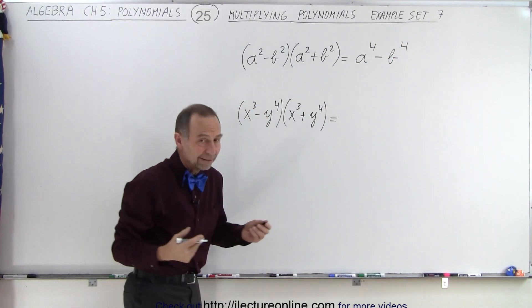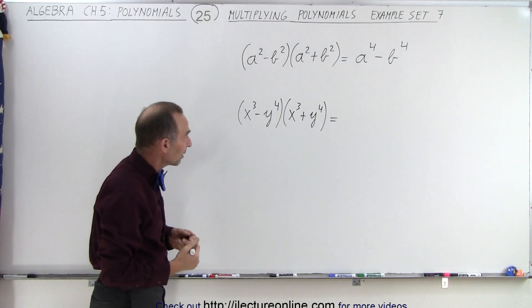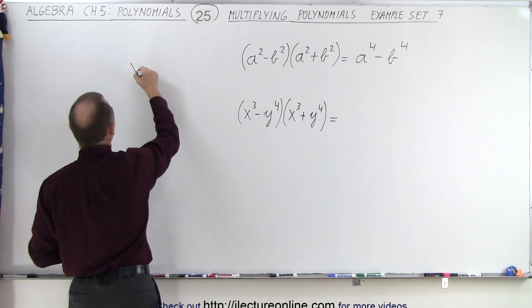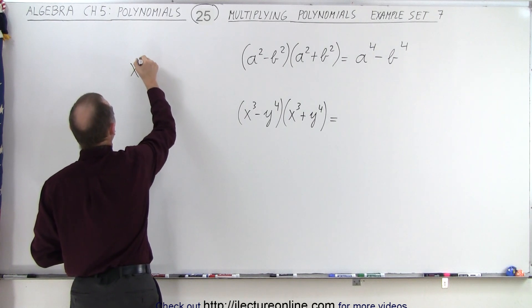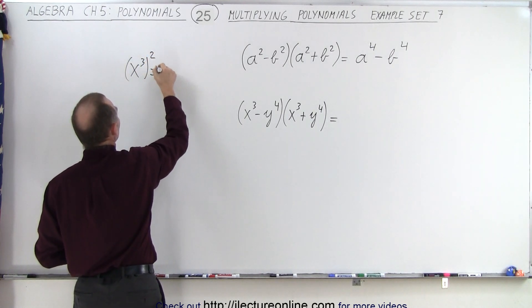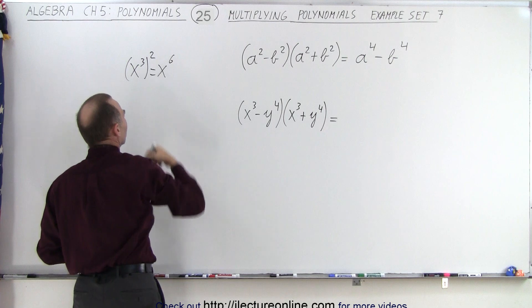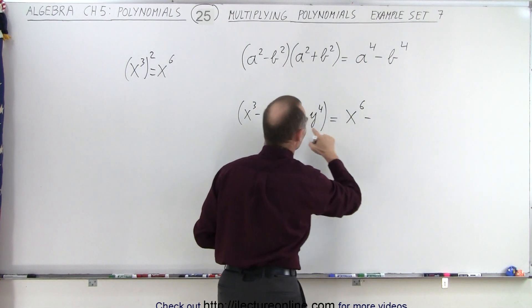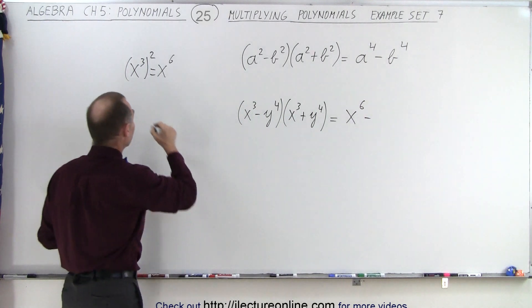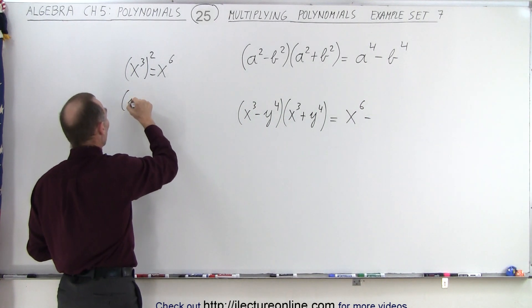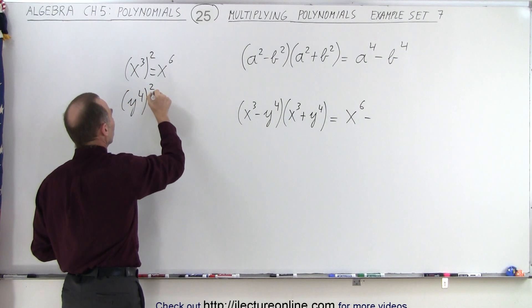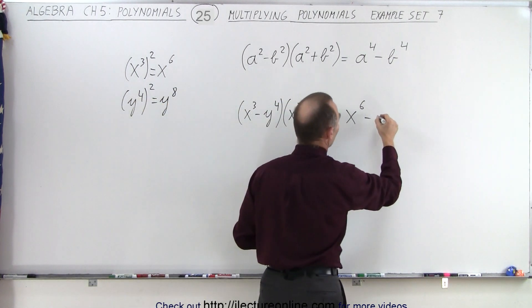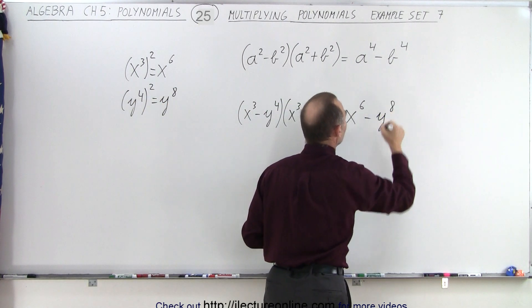Over here we do exactly the same thing. We have to be careful with the exponents. It'll be the first term squared. Notice that x to the third, when we square that, is equal to x to the sixth because we multiply exponents. So this becomes x to the sixth minus the last term squared. If we take y to the fourth and we square it, that gives us y to the eighth. And so that would be x to the sixth minus y to the eighth.